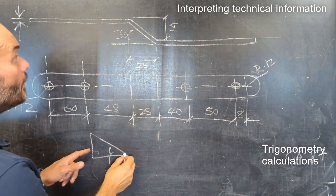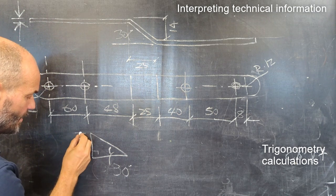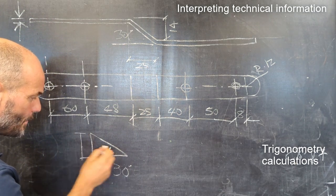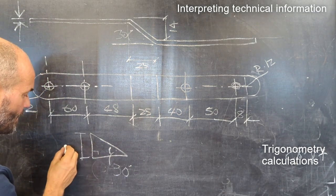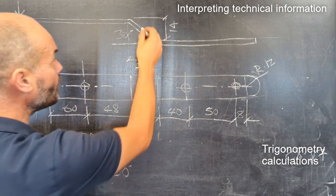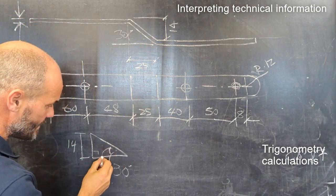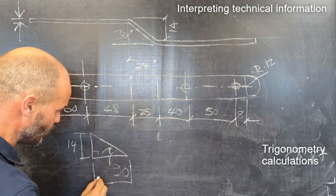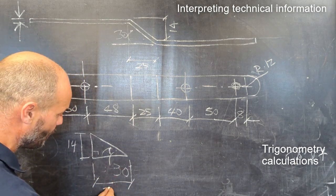We know the length of two of the sides actually. So we know the length of the side opposite the angle - that's the opposite side, we know that's 14. We also know the length of the side which is adjacent to, or next to that, which is 25.